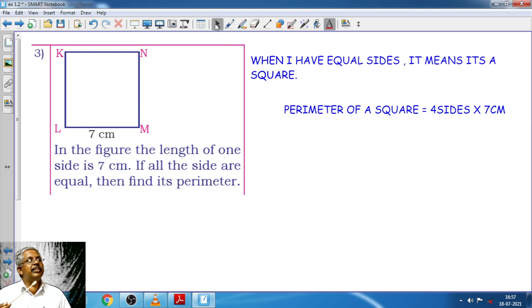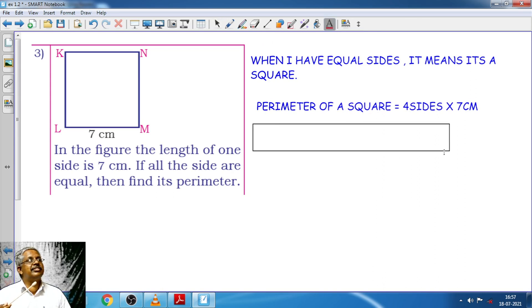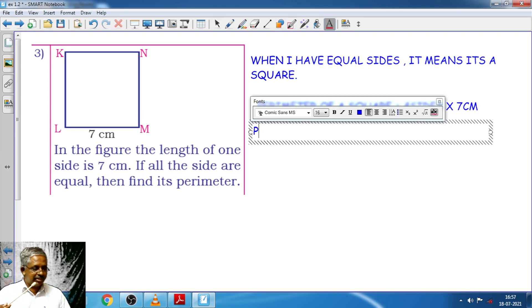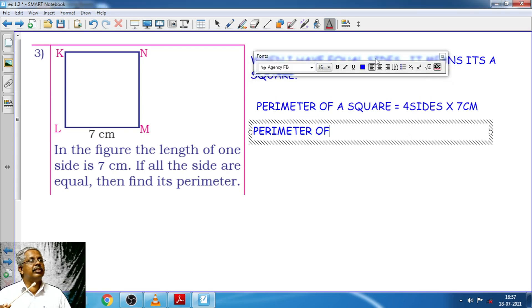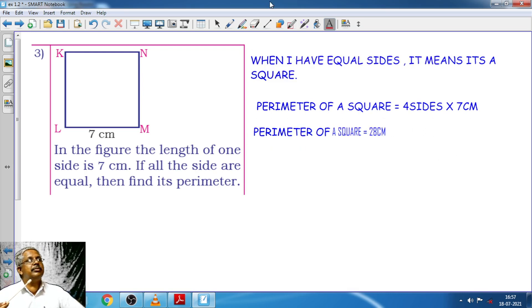Square is equal to 4 sides multiplied with 7 cm. So if that is the case, what is the perimeter? Perimeter of a square is equal to 4 sides. How much it is? 28 cm.